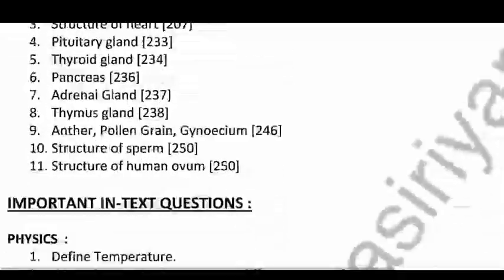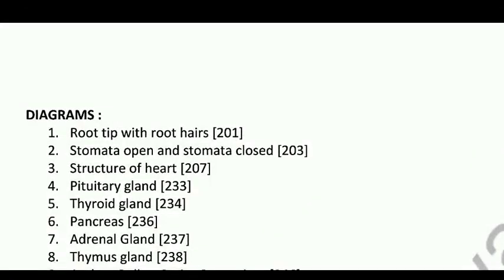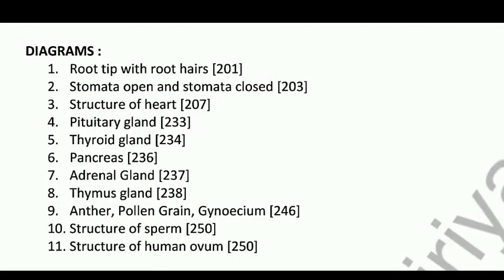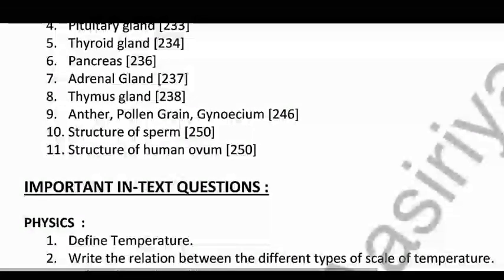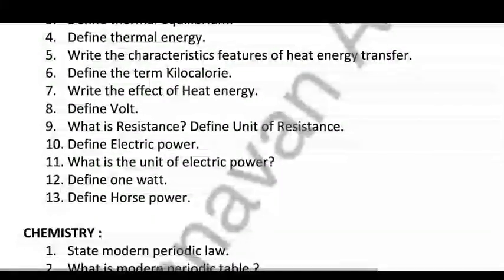If you look at the diagrams: root types, root cross-section, stomata open type, stomata closed type, structure of heart, pituitary gland, thyroid gland, pancreas, adrenal gland, thymus gland, anther, pollen grain, gynoecium, structure of sperm, structure of ovum. These are the important textbook diagram questions.